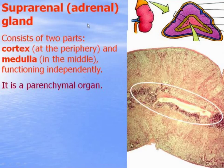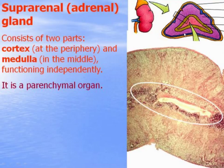The suprarenal or adrenal gland is located under the kidney and has a triangular shape. It consists of two parts: cortex in the periphery and medulla in the center — they are functionally independent. The adrenal gland is a parenchymal organ consisting of stroma and parenchyma. Stroma is represented by connective tissue capsule around and thin layers of loose connective tissue going inside. Parenchyma is represented by endocrine cells.